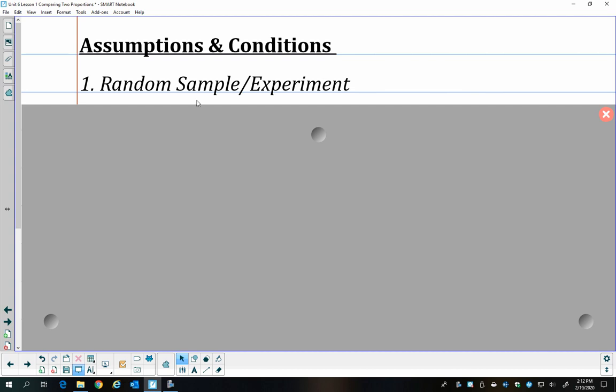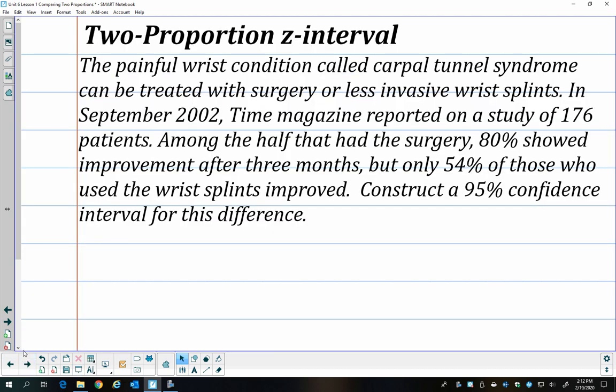As always, we need to either have a random sample or to have a randomly assigned experiment. We're going to have to assume that happened because I'm not sure it said it here, but we'll assume that they randomly assigned the 88 people to surgery and the other 88 to the wrist splints.